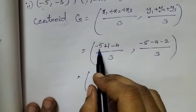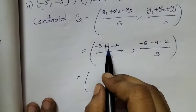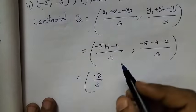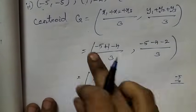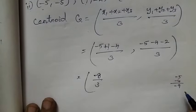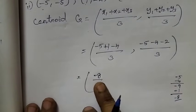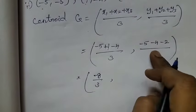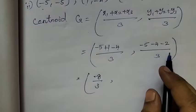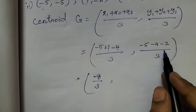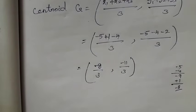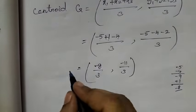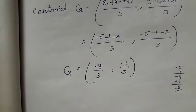Now we compute. Adding minus 5, plus 1, minus 4 gives minus 8 by 3. Be careful of the signs — if you have the same sign, add them. For the y-values, minus 5, minus 4, minus 2, we get minus 11 by 3. So the centroid answer is minus 8 by 3, minus 11 by 3.